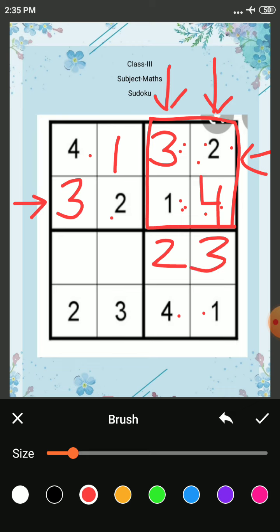So we will write 4 here. Now in this column, 4, 3, 2, which number is missing? 1.